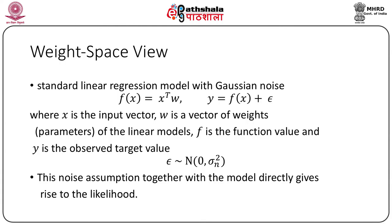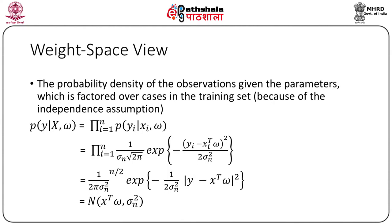ε is distributed as Normal(0, σ_n²). This noise assumption together with the model directly gives rise to the likelihood — the probability density of the observations given the parameters, factored over cases in the training set. Due to the independence assumption, we can write p(y | X, ω) as Normal with mean X^T ω and variance σ_n² times the identity matrix.